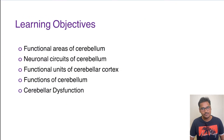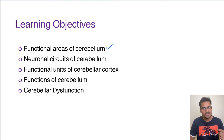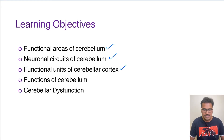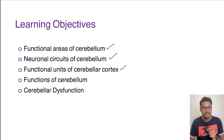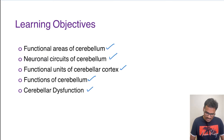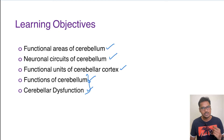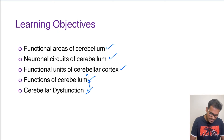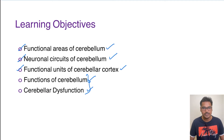We will be discussing the cerebellum under the following subheadings: the functional areas of the cerebellum, then neuronal circuits of the cerebellum — that is the inputs and outputs — then functional units of the cerebellar cortex, including its layers, then functions of the cerebellum, and cerebellar dysfunctions. The functions and dysfunctions will be covered in a separate video. Today we will discuss the functional areas, neuronal circuits, and functional units of the cerebellar cortex in detail.